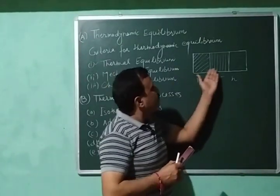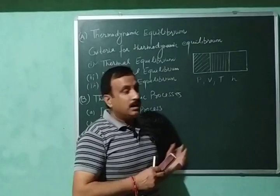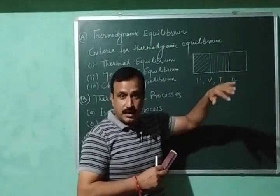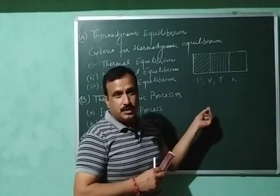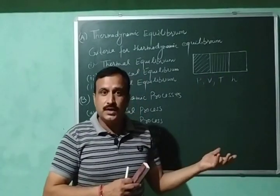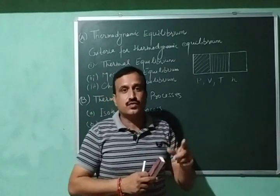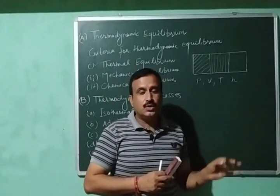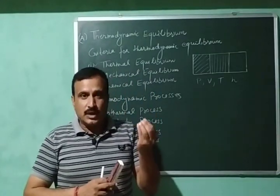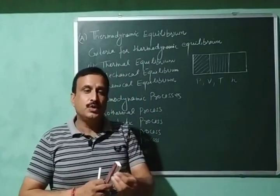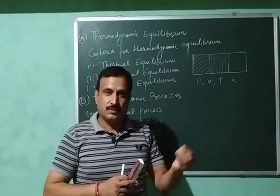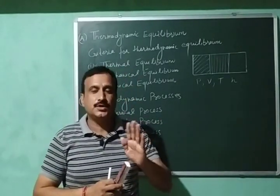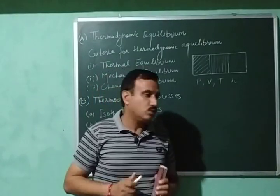For example, if we have three phases and there is a temperature difference — one phase is at higher temperature and another is at lower temperature — then there will be flow of heat, because heat flows from higher temperature to lower temperature. So in order to attain thermal equilibrium, temperature has to be constant throughout the system.